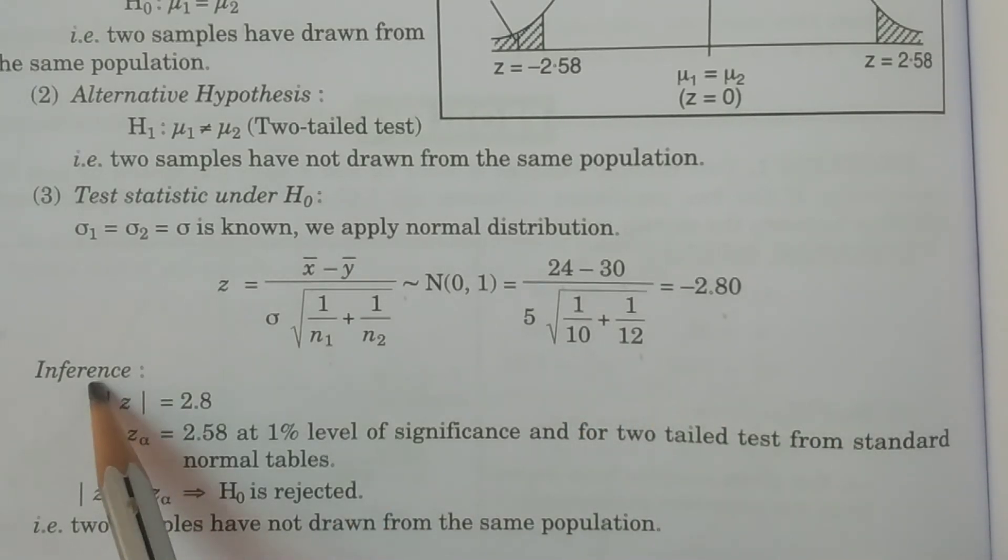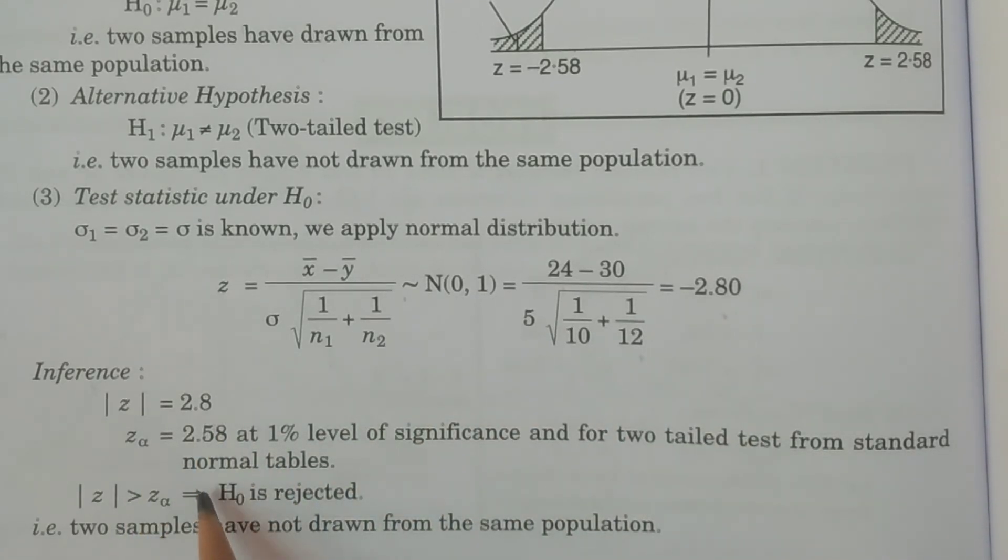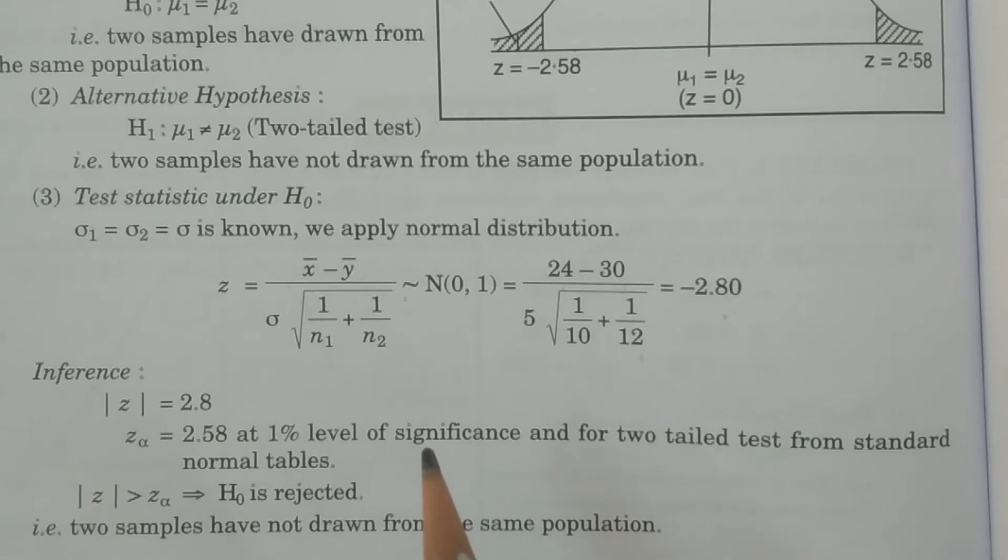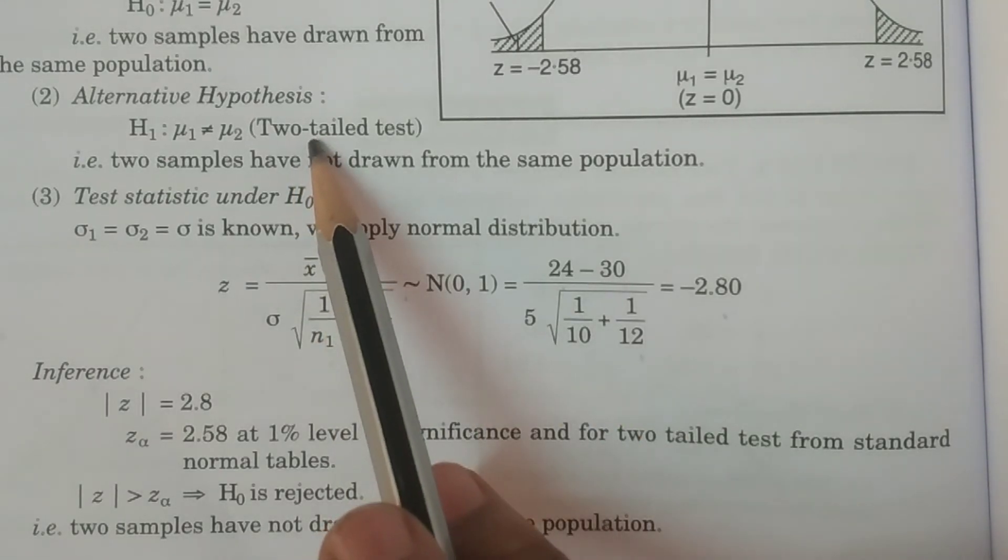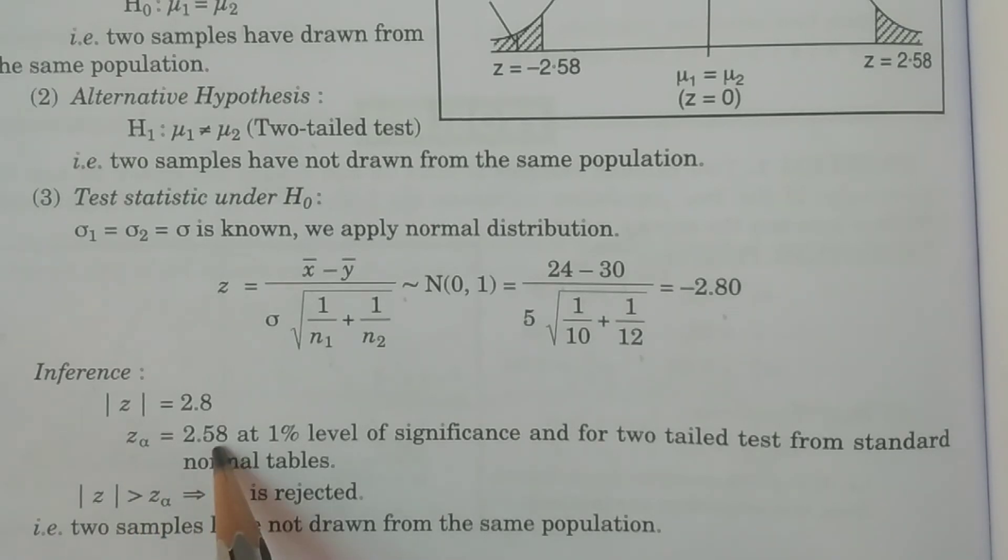So, you have to do inference in the fourth point, inference or conclusion, comparison conclusion. Modulus of z, 2.8 plus 2.8 and z alpha, z alpha value, it is for at 1 percent level of significance, it is given in the problem, 1 percent level. And for two-tailed test, you refer the alternative, it is two-tailed test. At 1 percent level, for two-tailed test, from the standard normal tables, the tabulated value or significant value, z alpha is equal to 2.58.